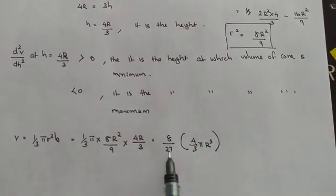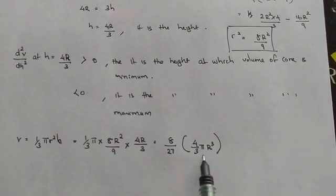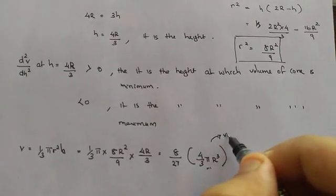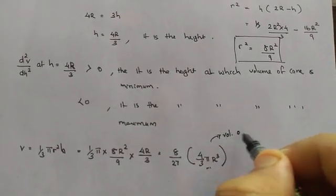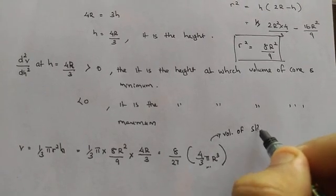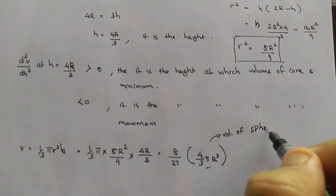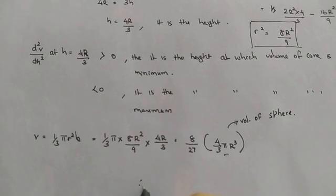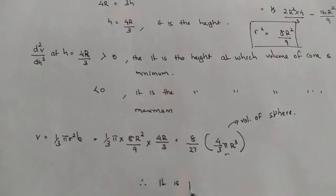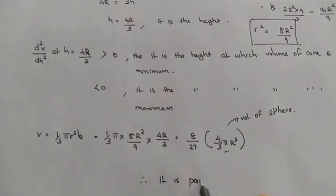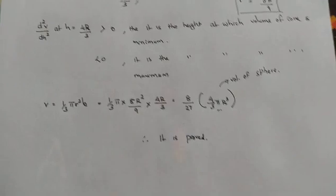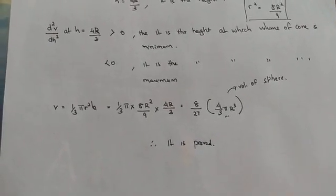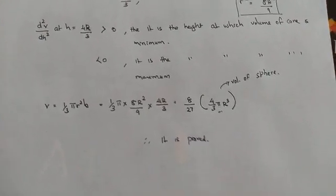This is proved. The volume of the largest cone inscribed in a sphere is 8 by 27 of the volume of the sphere. Thank you. If you like my video, please subscribe to my channel and share it.